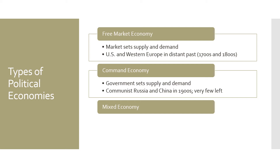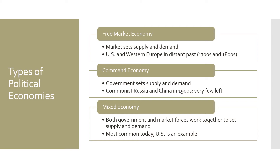Even communist China today allows a different mix. Most economies in the world today are what is called a mixed economy, where both government and market forces are at work — the government does intervene, but there are also free market forces. The US is an example of a mixed economy today, as are most developed nations — and in fact most nations even if they're not so developed. There's a Khan Academy video linked in this unit called 'Command versus Market Economies' if you'd like more detail.